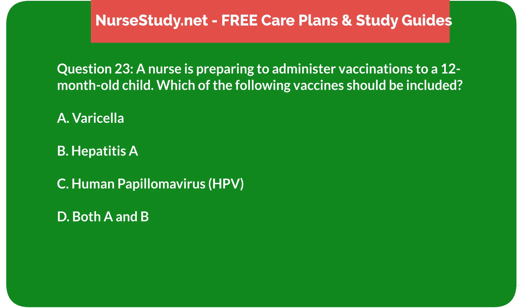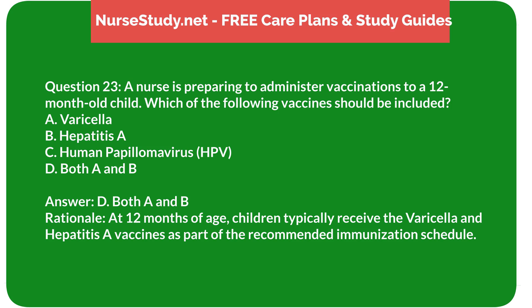Question 23: A nurse is preparing to administer vaccinations to a 12-month-old child. Which of the following vaccines should be included? A) varicella, B) hepatitis A, C) human papillomavirus (HPV), D) both A and B. Answer: D) both A and B. Rationale: At 12 months of age, children typically receive the varicella and hepatitis A vaccines as part of the recommended immunization schedule.